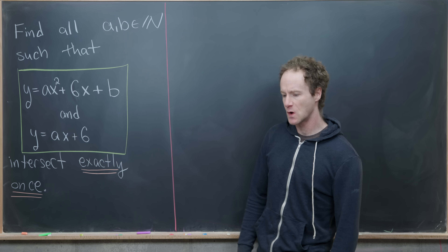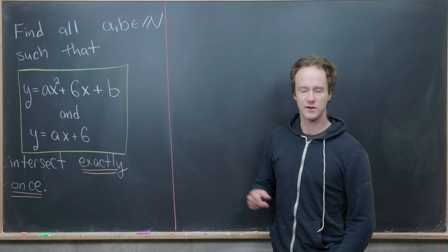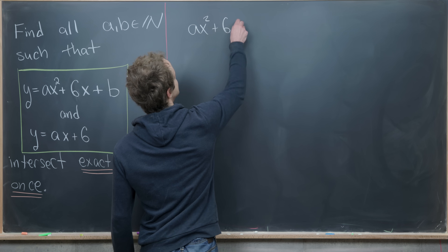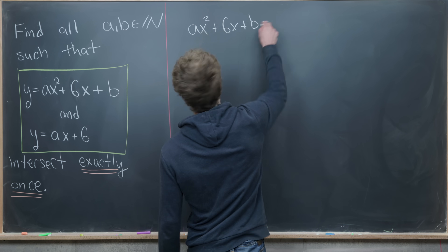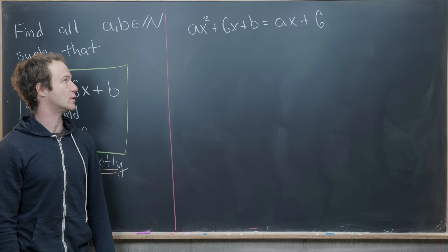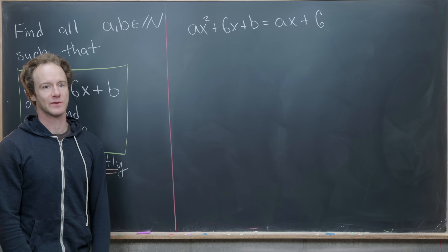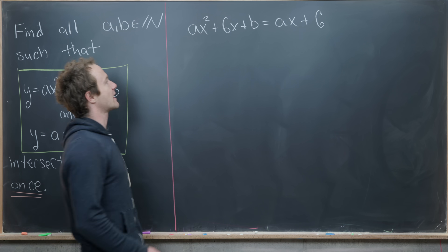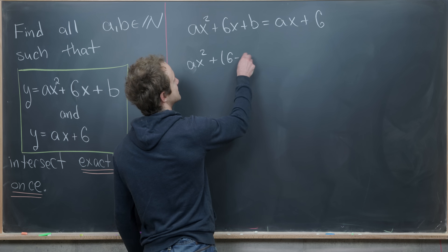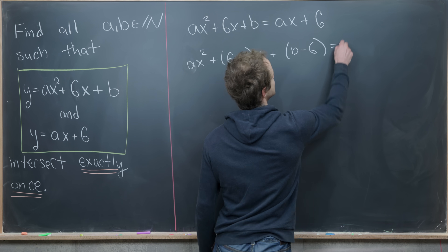Let's set these two equations equal to each other so we can look for the intersection points. That gives us ax² + 6x + b = ax + 6. Rearranging, we get ax² + (6 − a)x + (b − 6) = 0, a quadratic equation in x where a and b are undetermined constants.